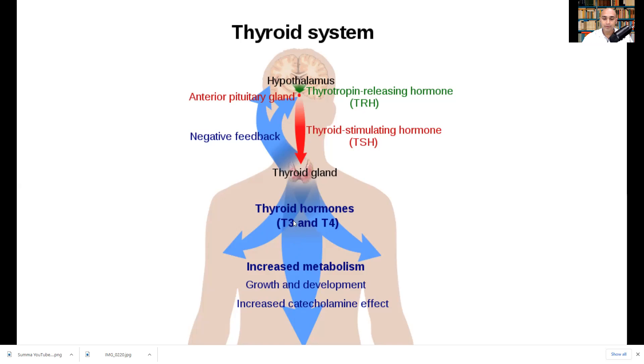Something to note, though, is as T3 levels and T4 levels get too high, there is negative feedback upon the pituitary, so you have less TSH secretion, and that's the way in which it controls itself, your levels don't get too high.